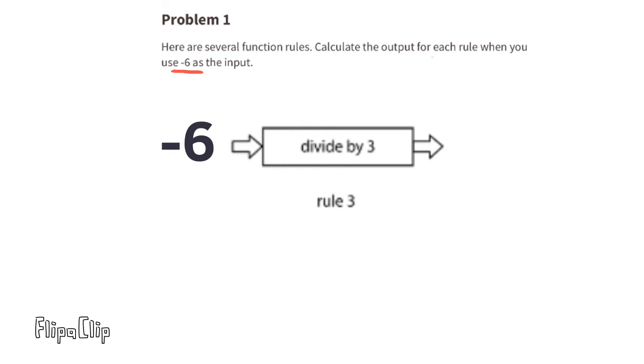Negative 6 is the input. The function is divide by 3. Negative 6 divided by 3. The output is negative 2.